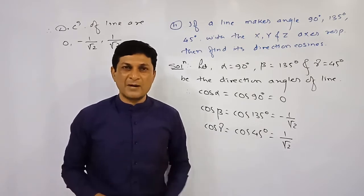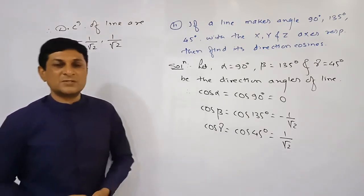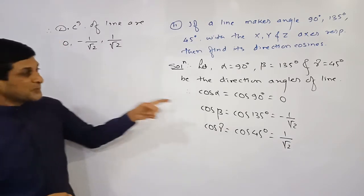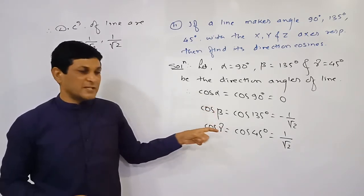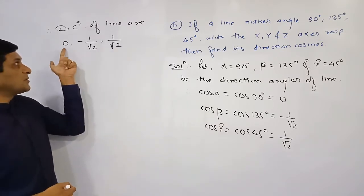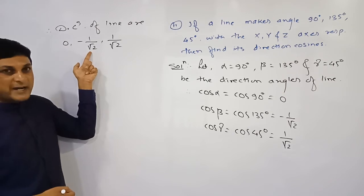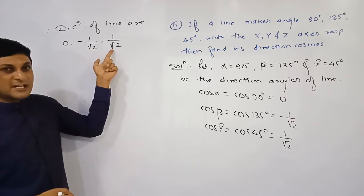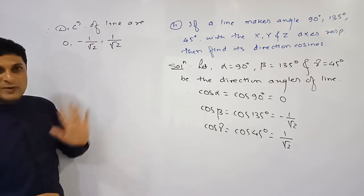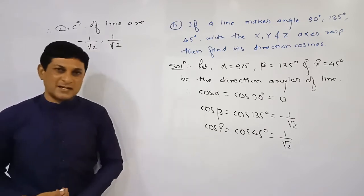To verify the answer, we check that the sum of squares of the three direction cosines equals 1: 0² + (−1/√2)² + (1/√2)² = 0 + 1/2 + 1/2 = 1. The condition cos²α + cos²β + cos²γ = 1 is satisfied, confirming our answer is correct.